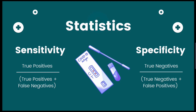The equation for sensitivity is true positives divided by true positives plus false negatives, while specificity is true negatives divided by true negatives plus false positives. Remember to multiply the answer by 100 to get a percentage.